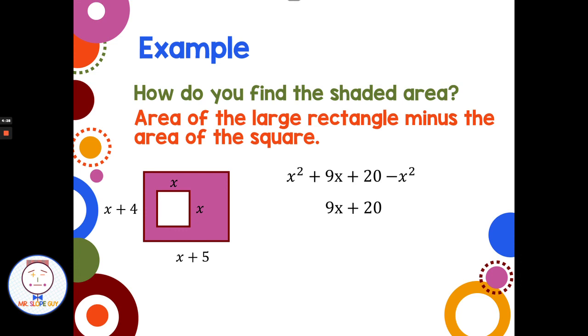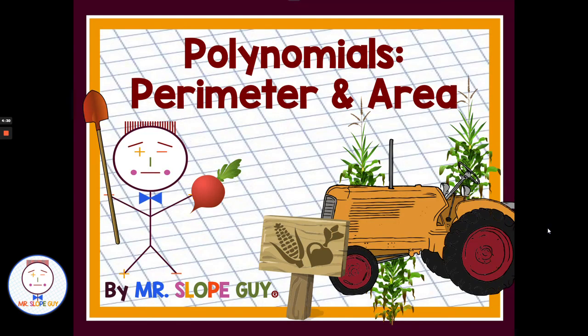And I hope that helps you guys get going on finding the area and perimeter of shapes involving polynomials. You can always find your other formulas, like for area of trapezoid. You can always look those up. Have a great day. O-U-T spells out.